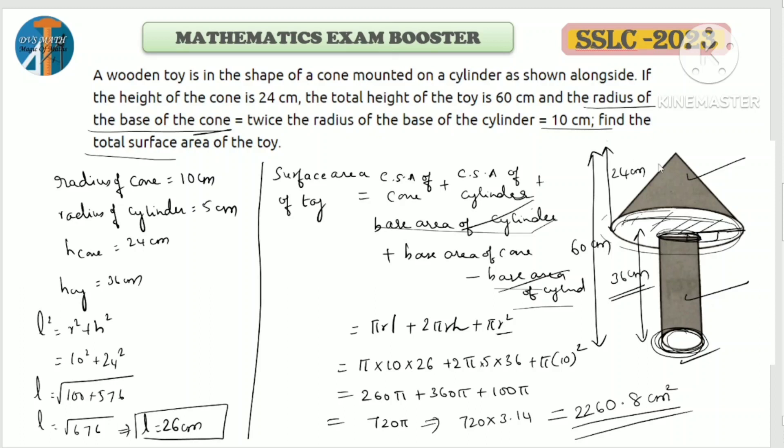So the answer is 2260.8 cm squared. What you can do directly is go for CSA of cone plus CSA of cylinder plus base area of cone, not cylinder, base area of cone. That's one approach you can take. Similar type of problems also, so please practice. Going for next question.